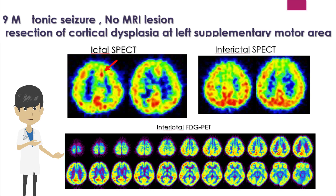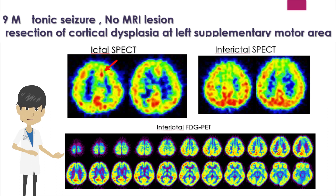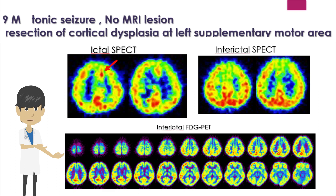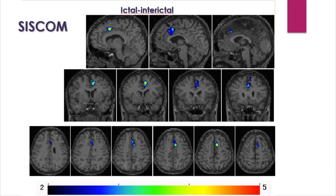This is a 9-year-old boy with supplementary motor area seizures, and the MRI showed no abnormalities. Ictal SPECT showed increased perfusion in the left supplementary motor area. FDG PET showed mild hypometabolism in a large area of the left frontal lobe. SISCOM shows increased perfusion localized to the left supplementary motor area. Epilepsy focal resection of this area was performed and the seizures resolved. Pathological findings confirmed focal cortical dysplasia.